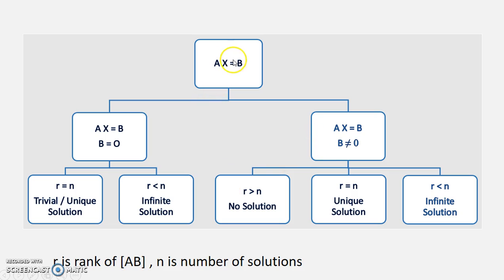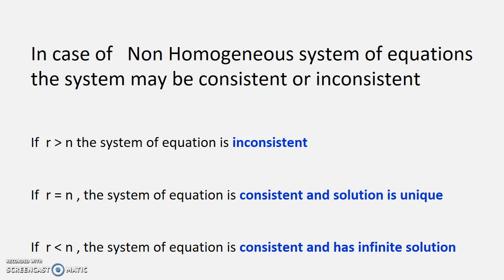Now for non-homogeneous equation that is AX = B. This is what we have seen. AX = B where B is non-zero. There are three different cases. In this case the system will be sometimes inconsistent depending upon the case. If r is more than n the system will not have a solution. If equal to n it will have a unique solution and less than n it will have infinite solution. That is what I have written once again. r more than n inconsistent or equal to n consistent and unique solution less than n infinite solution. So you have to remember these are all very important.